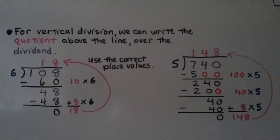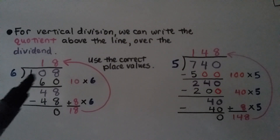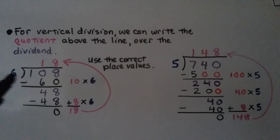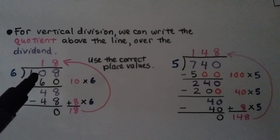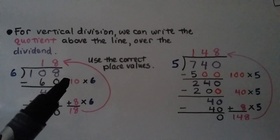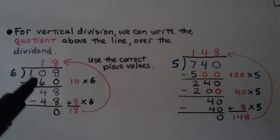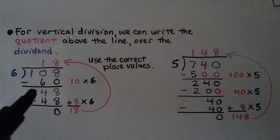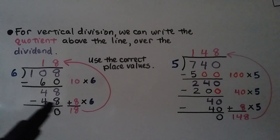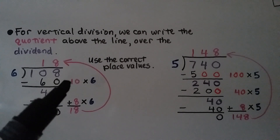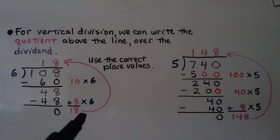For vertical division, we can write the quotient above the line over the dividend. We have 108 divided by 6. We need to find how many times 6 will fit into 108. We start off by using 60 — that's 10 times 6. We do our subtraction and the difference is 48. And 8 times 6 is 48, so we subtract that and get 0.